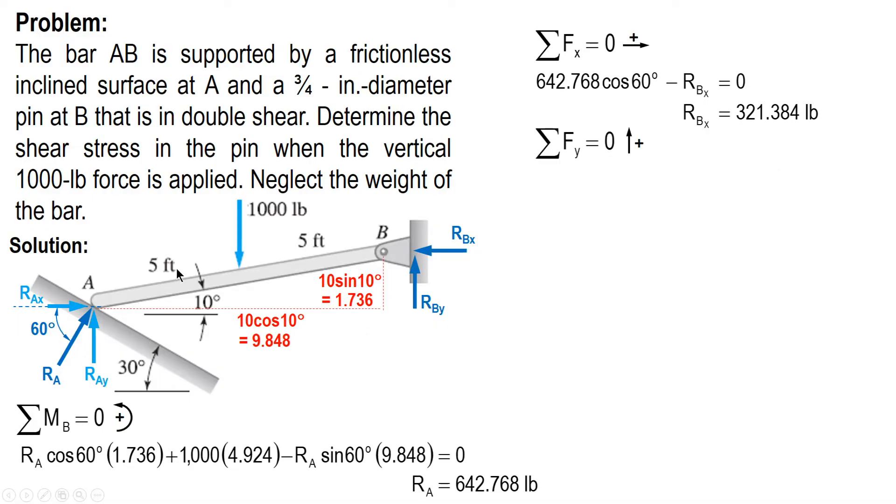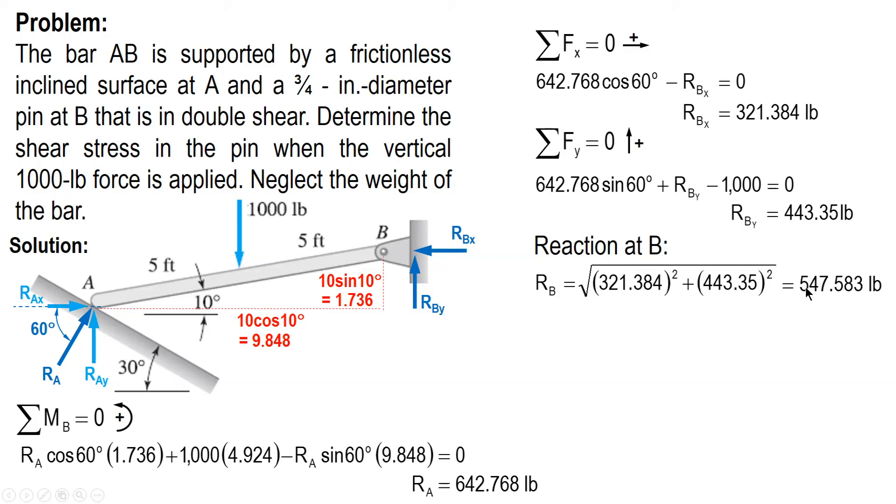For the vertical direction, there are three vertical forces: RAy plus RBy minus 1000 equals zero. And RBy is equal to 443.35 pounds. With these components, we can solve for the resultant. The reaction at B is equal to 547.583 pounds. This is the force that will cause shear stress at B.